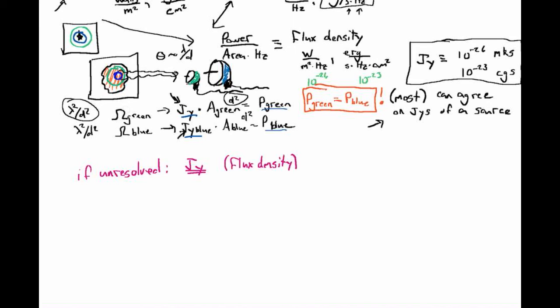If the source is resolved, then what we'd like to do is take our flux density and divide by the beam area — this omega. If we divide by our beam area, then whichever telescope we're using, because we measure the same power, we divide by the collecting area to get our Janskys.